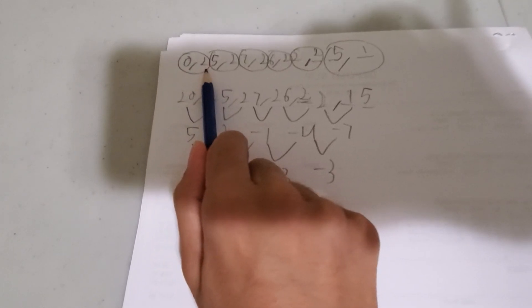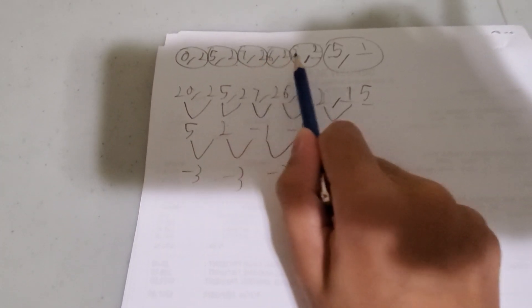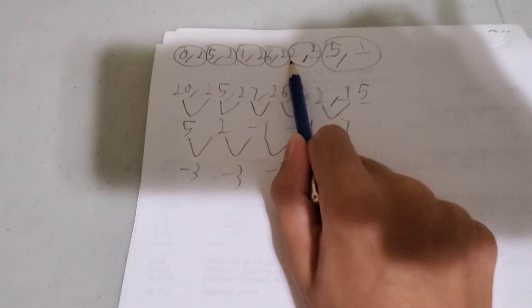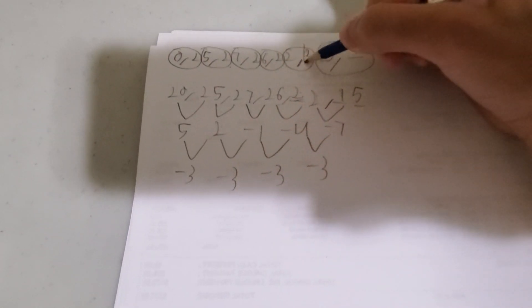So we have 0, 25, 27, 26, 22. And our next number is 25.